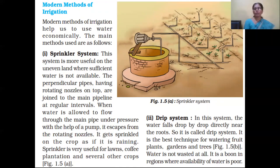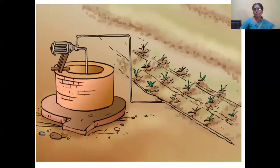The sprinkler system is mainly useful in lawns, coffee plantations, and several other crops where water availability is insufficient. The second modern method is drip irrigation. As the name indicates, water falls drop by drop directly near the roots. This is the best technique to conserve water and is used where water is very scarce. It prevents wastage of water and is used to grow food plants, garden plants, trees, etc.